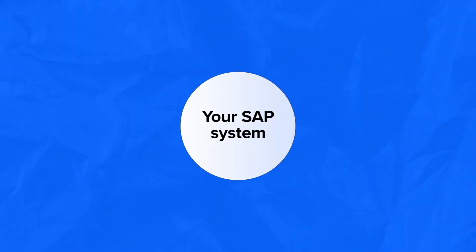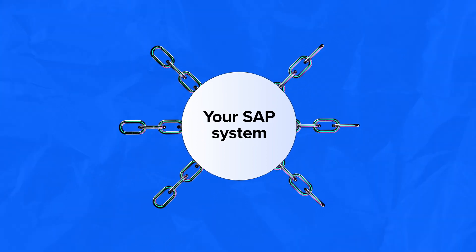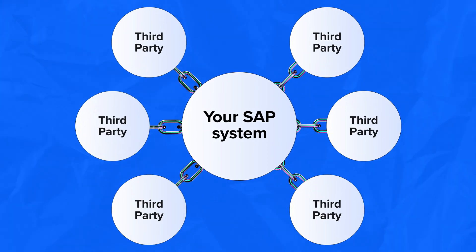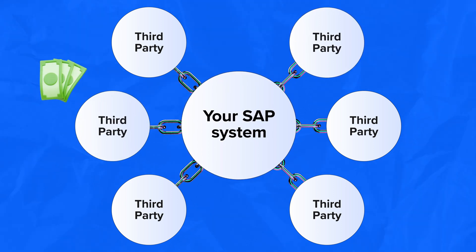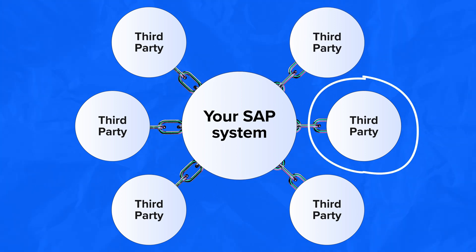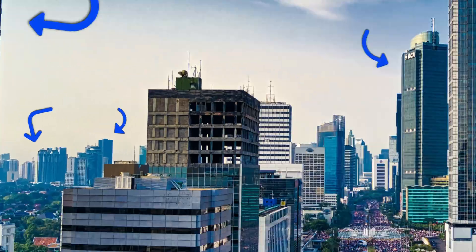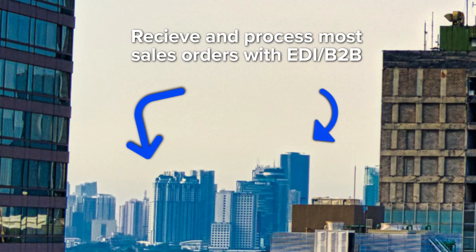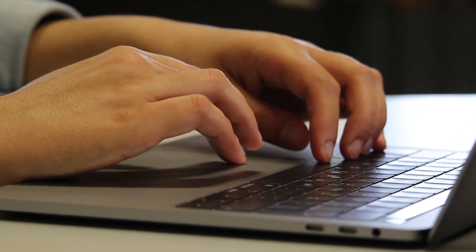If you have ever been involved in SAP projects, you probably realize that your SAP system is connected to many different EDI and B2B partners — for example, companies that buy from you without having to call you or exchange emails, or third-party systems like your logistics provider. These connections are how big SAP customers receive and process most of their sales orders, so it's crucial to make sure they are up and running, especially when making any changes to your system.